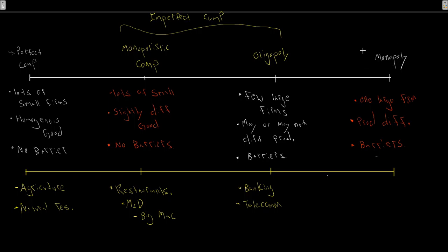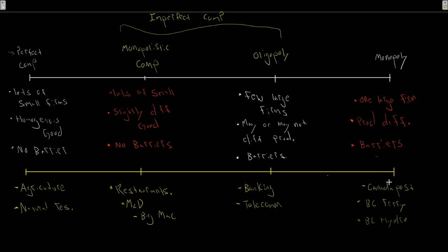Finally, our monopolies. In Canada we have Canada Post — that's a monopoly; they're the only provider of first-class mail. We have BC Ferries, BC Hydro, and many more. What you'll notice with these three is they're actually all crown corporations — public companies run with a charter to operate given by the government. We'll talk about why that's the case once we get to looking at monopolies.